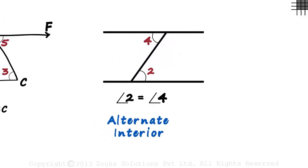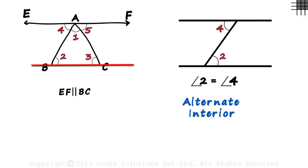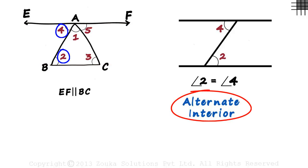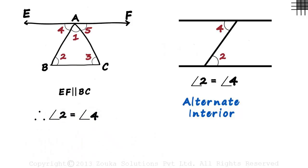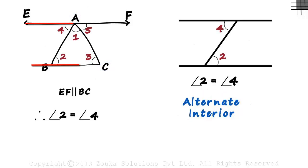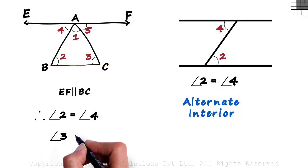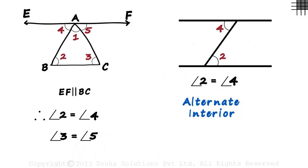Now let's zoom out and look at the original figure. BC and EF are parallel lines, and angle 2 and angle 4 are alternate interior angles, which is why angle 2 will equal angle 4. If you look at the figure carefully, you will notice that angle 3 and angle 5 are alternate interior angles too. AC is the transversal which intersects these two parallel lines, meaning angle 3 will also be equal to angle 5. Both these pairs are alternate interior angles.